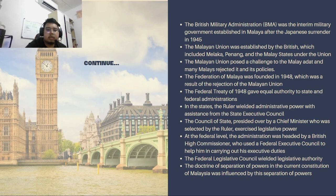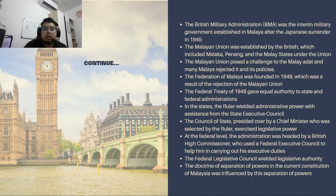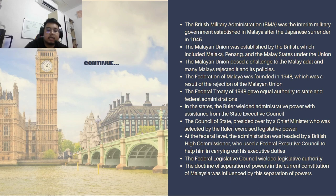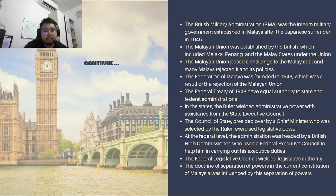Because many people did not like the Malayan Union, the British decided to proceed with the Federation of Malaya. Under the Federation, the ruler wielded administrative power with assistance from the state executive council, while the council of state, presided over by a chief minister selected by the ruler, exercised legislative power. The administration was headed at the federal level by a British High Commissioner, who used a federal executive council to carry out executive duties, and the federal legislative council wielded legislative authority. Later, the doctrine of separation of powers in our constitution was influenced by this separation of power.